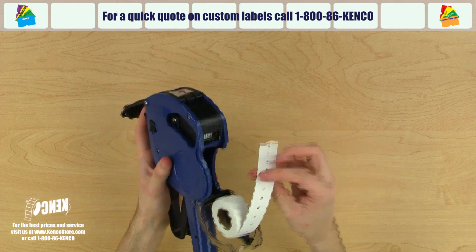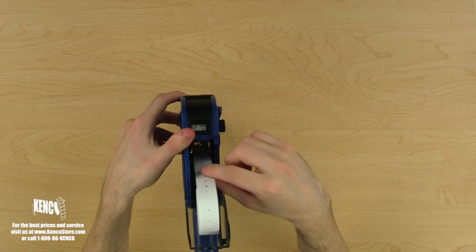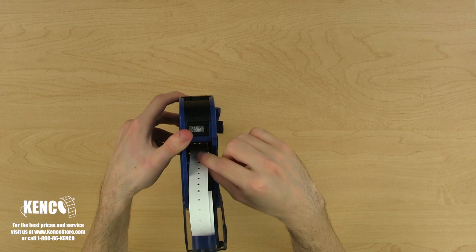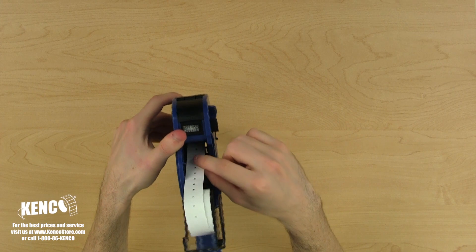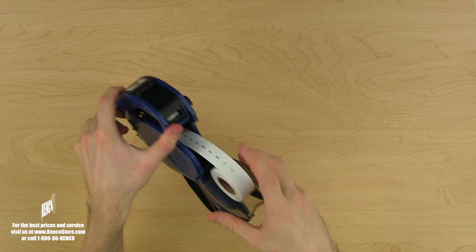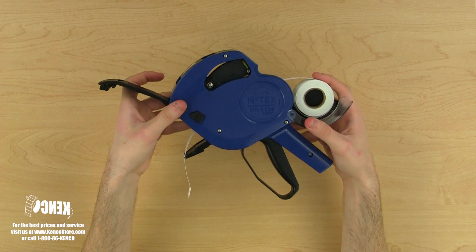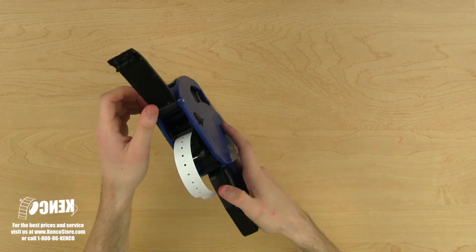To make the next step easier, let's bend that first label about 30 degrees away from the label lining. Now we can begin feeding the labels into the gun between the pressure plate and the advancing mechanism. You'll want to be careful not to feed the labels around the nip roller because that would cause the labels to jam. Pull about 4 to 5 inches through for the next step and we'll close the upper housing assembly.